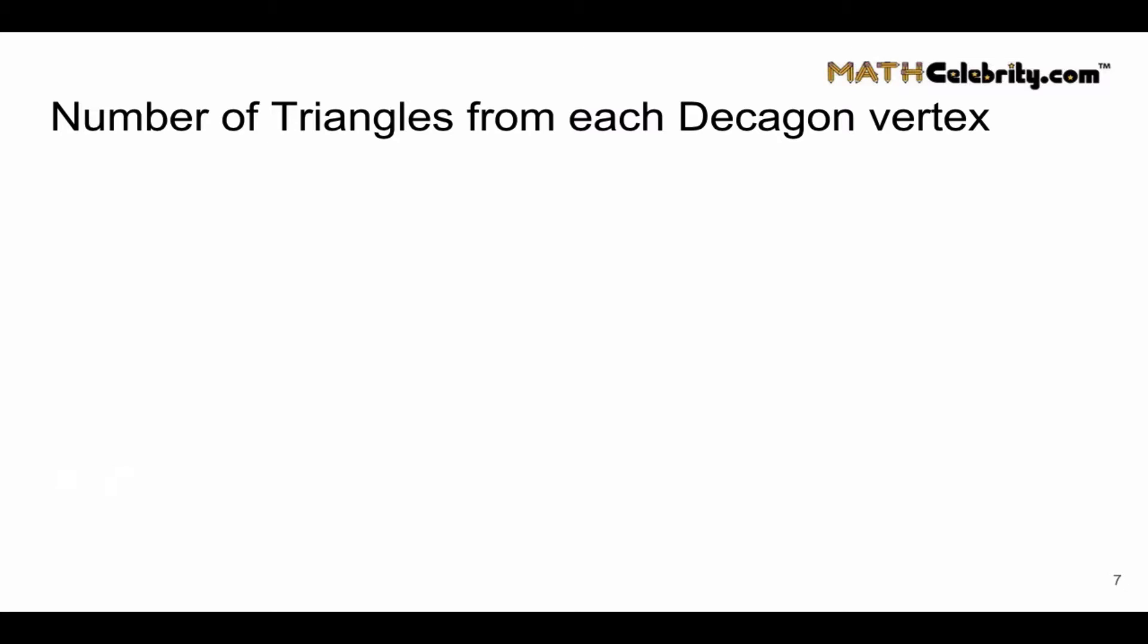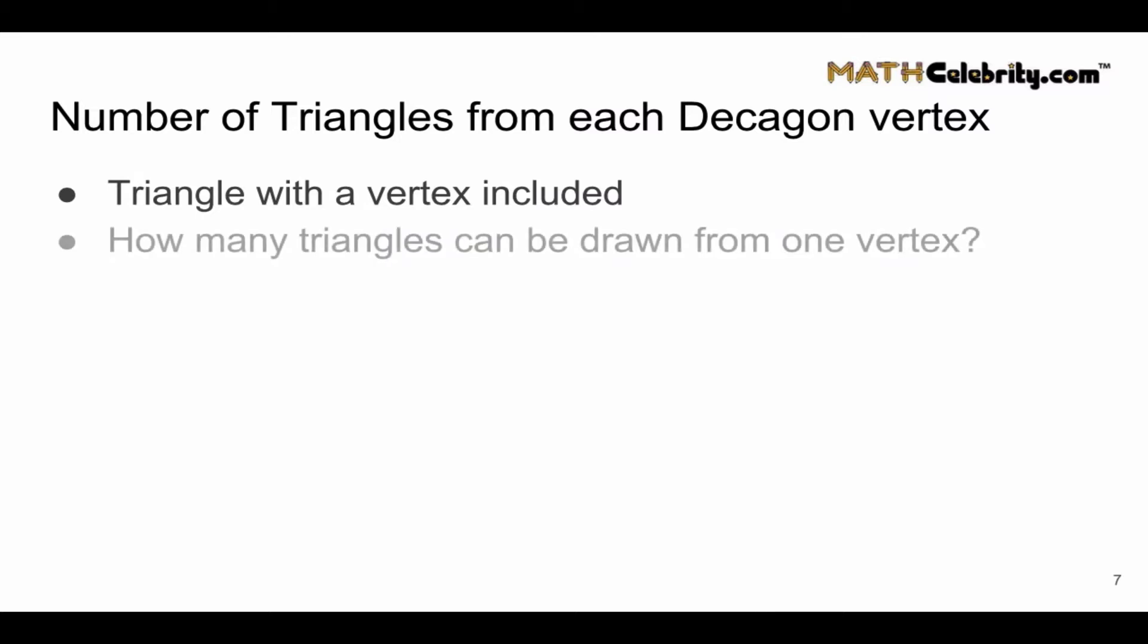How about the number of triangles from each Decagon vertex? This means that the triangle includes a particular vertex. Now the standard polygon formula is n minus 2 triangles, where n is the number of sides. With n equals 10 for a Decagon, we have 10 minus 2, or 8.